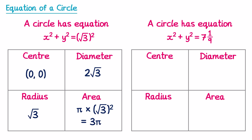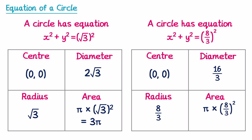For the next question we have a mixed number, which we need to convert to an improper fraction. We do 7 × 9 = 63, then add 1, giving 64/9. This is convenient because 64 and 9 are both perfect squares, so we write it as (8/3)². The centre is (0, 0), the radius is 8/3, the diameter is 16/3, and the area is π × (8/3)² = 64π/9, which you could also write as a mixed number.